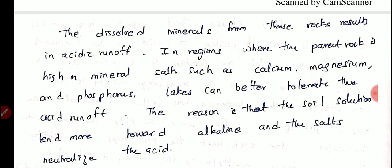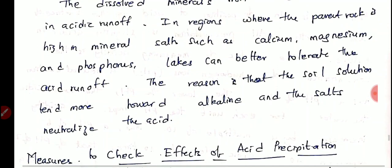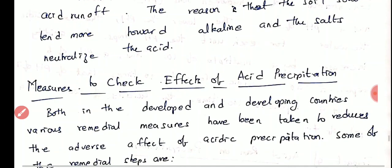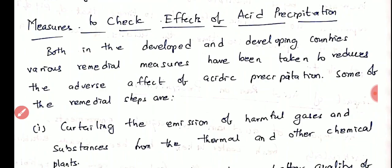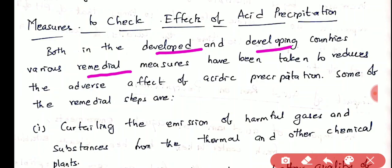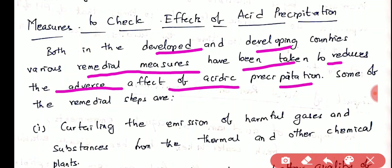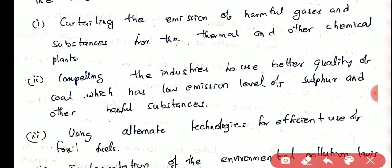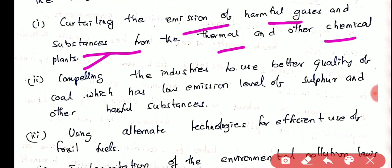So it also depends upon the parent rock beneath the lake — soil solution tends to move towards alkaline, and the salts neutralize the acid. Measures to check effects of acid precipitation: both in developed and developing countries, various remedial measures have been taken to reduce the adverse effects of acidic precipitation. Some remedial steps include curtailing the emissions of harmful gases and substances from thermal and chemical plants.